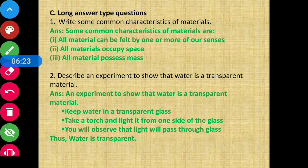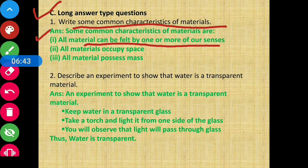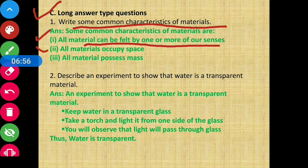Section C: Long Answer Type Questions. Question number 1: Write some common characteristics of materials. Answer: First, all materials can be felt by one or more of our senses — we have five sense organs. Second, all materials occupy space. Third, all materials possess mass.